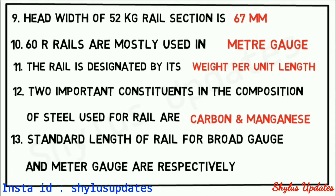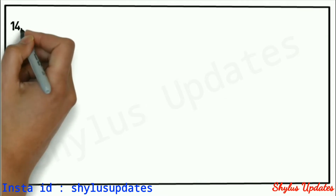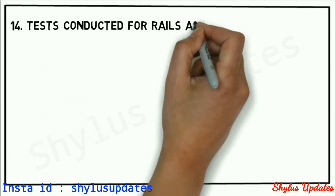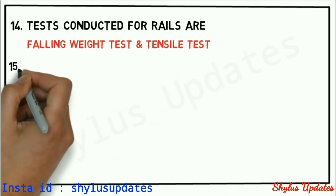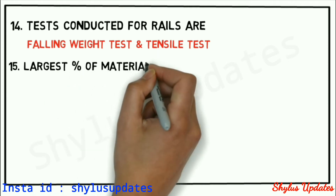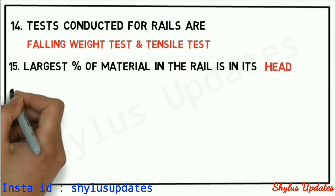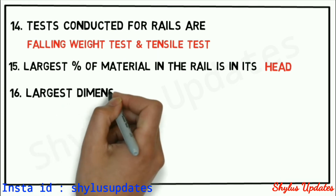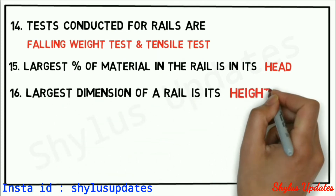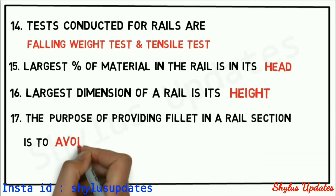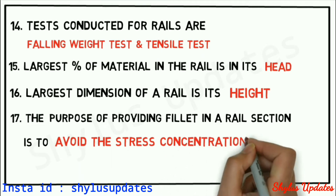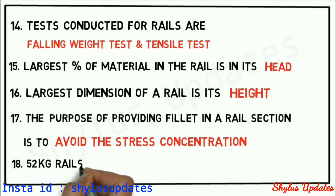Standard length of rail for broad gauge and meter gauge are respectively 13 meters and 12 meters. Tests conducted for rails are the falling weight test and tensile test. The largest percentage of material in the rail is in its head. The largest dimension of a rail is its height.